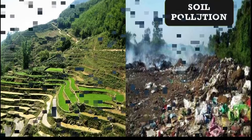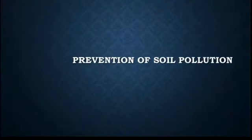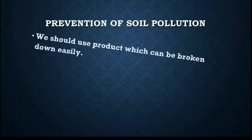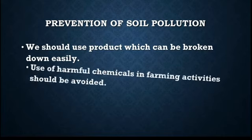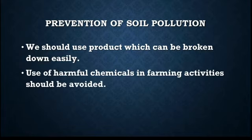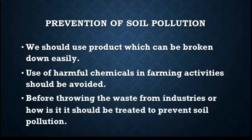So how do we prevent soil pollution? We should use products which can be broken down easily by the microbes in the soil. For example, paper breaks down easily in the soil but plastic does not, so we need to use paper bags instead of plastic bags. Use of harmful chemicals in farming activities should be avoided.